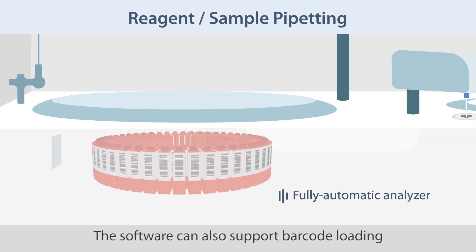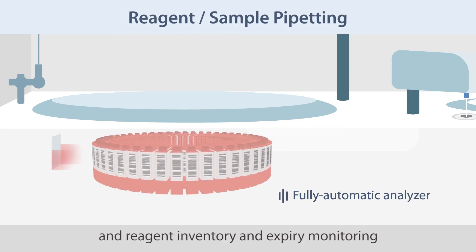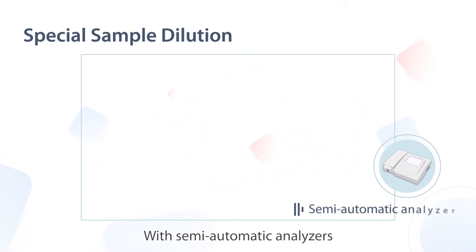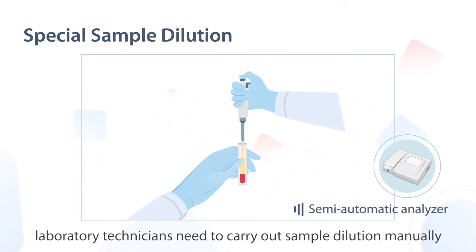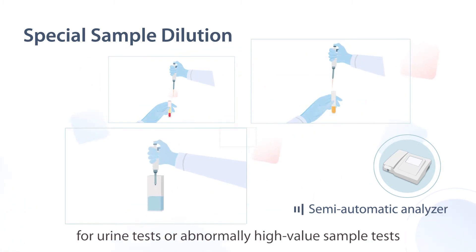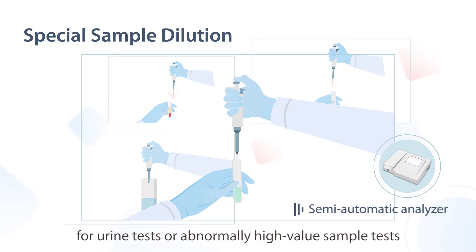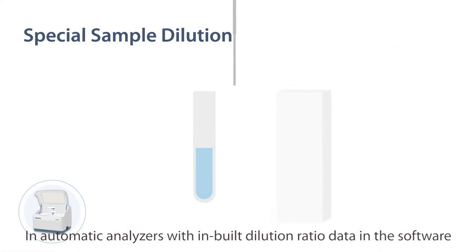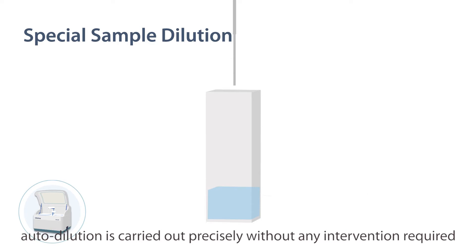The software can also support barcode loading and reagent inventory and expiry monitoring. With semi-automatic analyzers, laboratory technicians need to carry out sample dilution manually for urine tests or abnormally high-value sample tests. In automatic analyzers, with inbuilt dilution ratio data in the software, autodilution is carried out precisely without any intervention required.